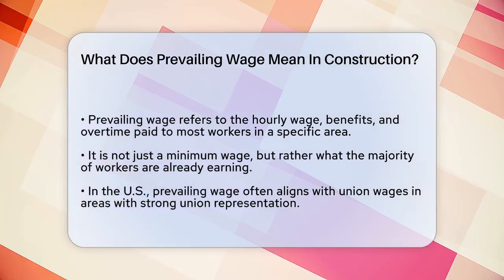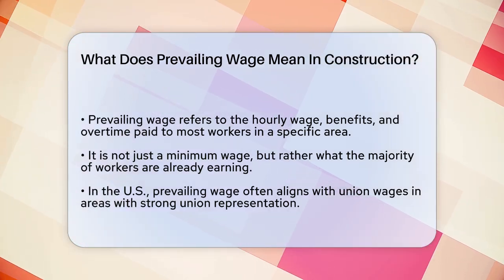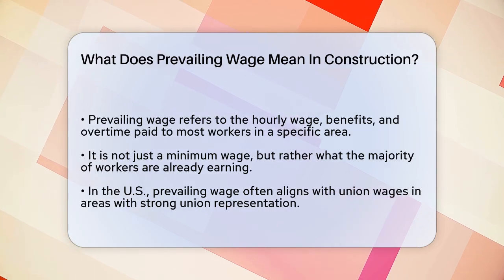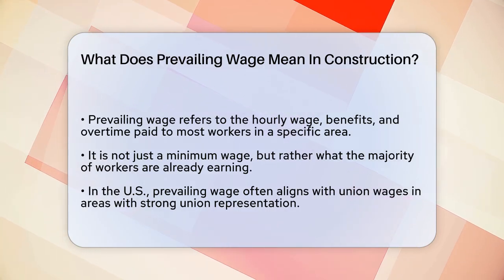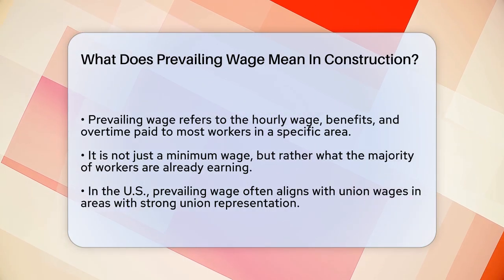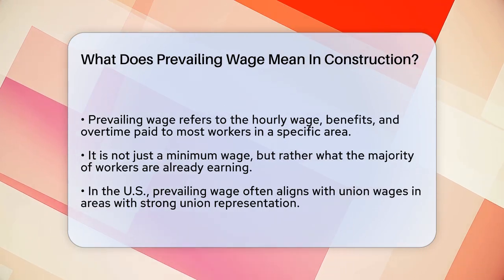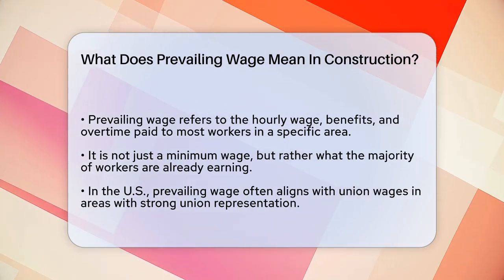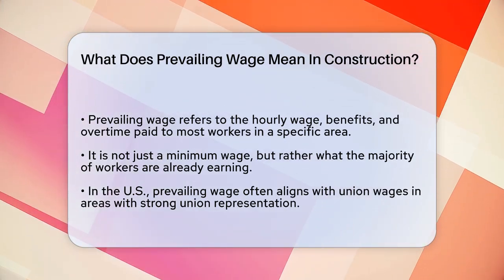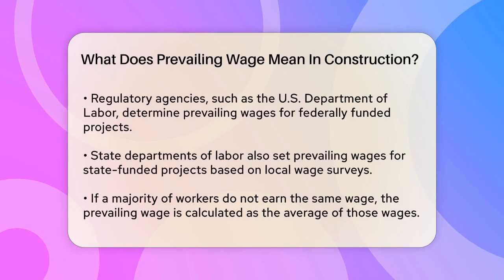In the United States, the prevailing wage is often the union wage, especially in areas with strong union representation. For example, if most construction workers in a city are union members and earn a certain wage, that wage becomes the prevailing wage for similar projects in that area.